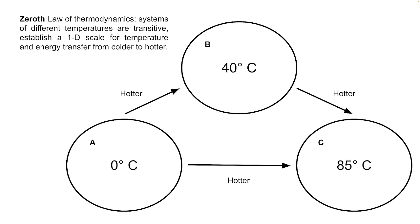Before we get to that, we need to talk about the zeroth law of thermodynamics. If you noticed in Maxwell's Demon, we're talking about ordering and how things move from one place to another. We can have a stochastic process — something moving according to Brownian motion with a certain amount of noise around a central tendency. The zeroth law of thermodynamics is where systems of different temperatures are transitive, establishing a one-dimensional scale for temperature and energy transfer from colder to hotter.